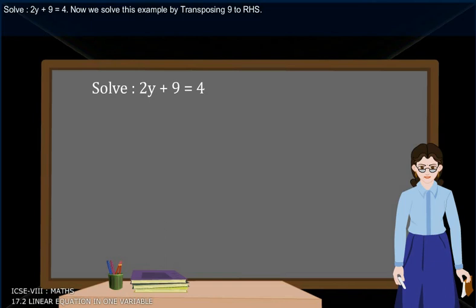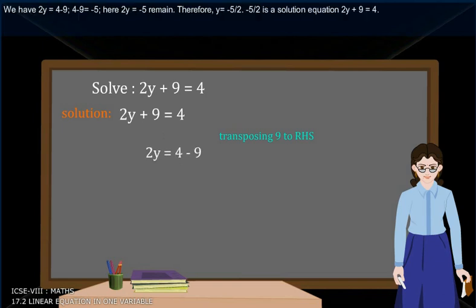Solve 2y + 9 = 4. Now, we solve this example by transposing 9 to RHS. We have 2y = 4 - 9.